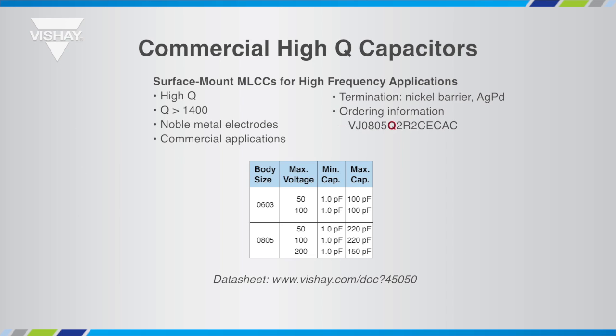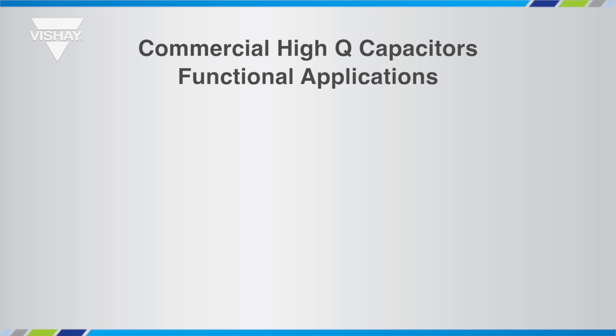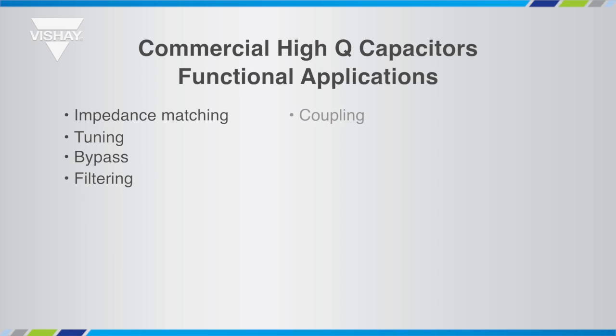High Q for industrial applications is based on noble metal technology and is the choice for more demanding industrial and medical applications, showing better reliability and stability with voltage and temperature. These series display very low resistance and high Q. In terms of functionality, high Q capacitors are found in circuitry like impedance matching, tuning, bypass, filtering, coupling, DC blocking, etc.